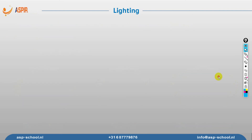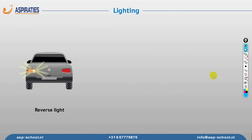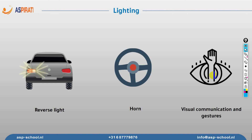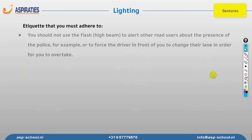We have the reverse light — when you apply reverse gear, the reverse light comes on automatically to warn pedestrians or drivers that you are reversing. We also have the horn as an audible warning, and visual communications and gestures. Sometimes you give a gesture to other drivers to stop or go back, or simply move your head to acknowledge you've seen them. Visual communication and gestures are also considered signals used to warn other drivers.